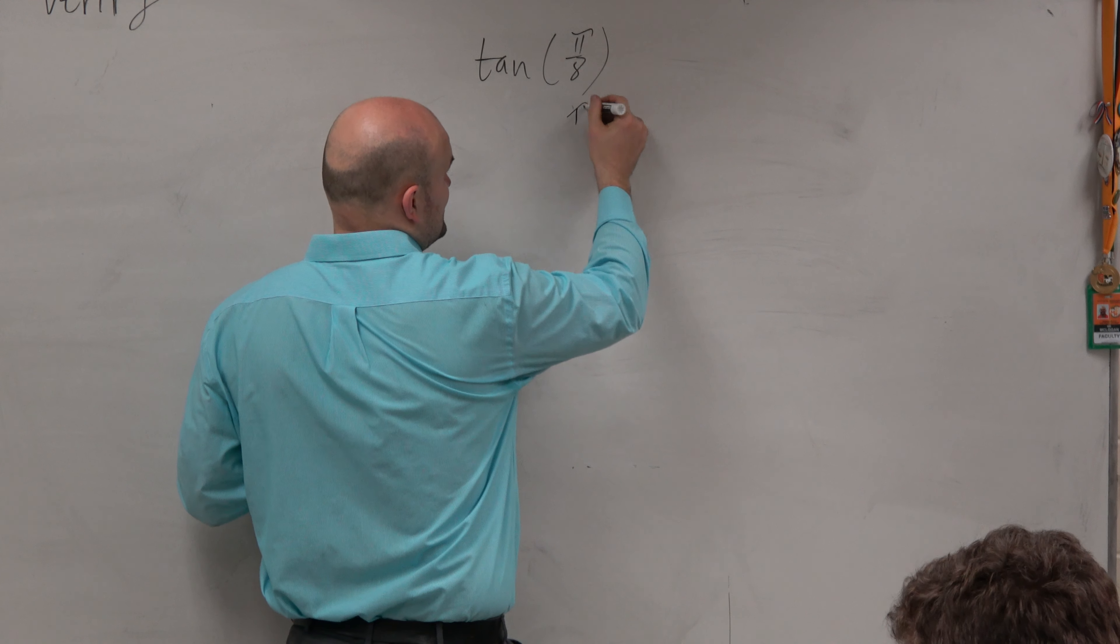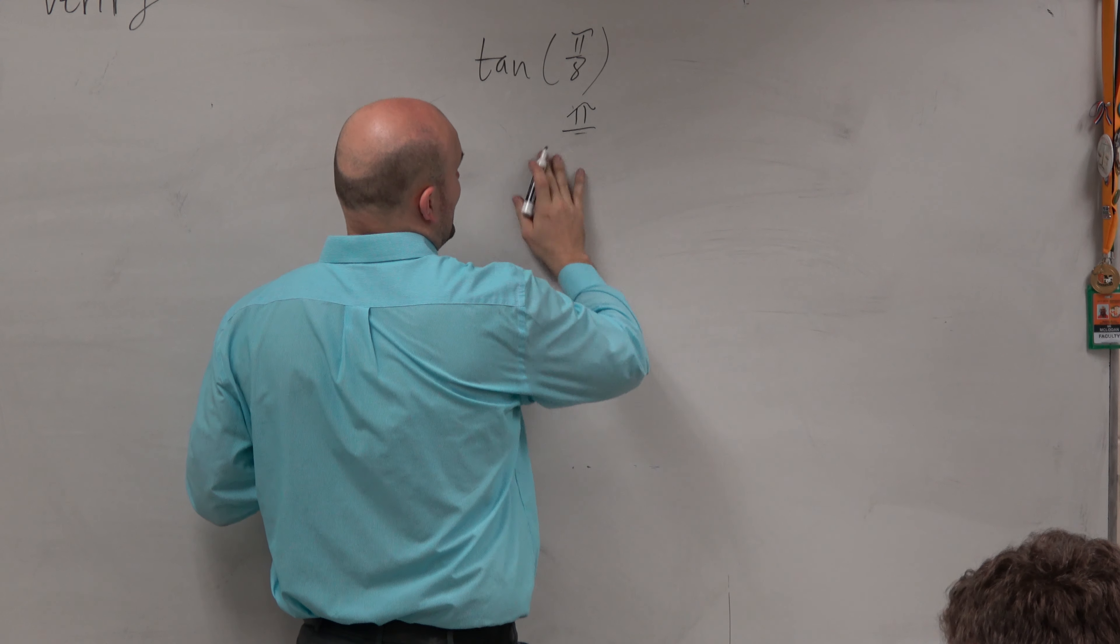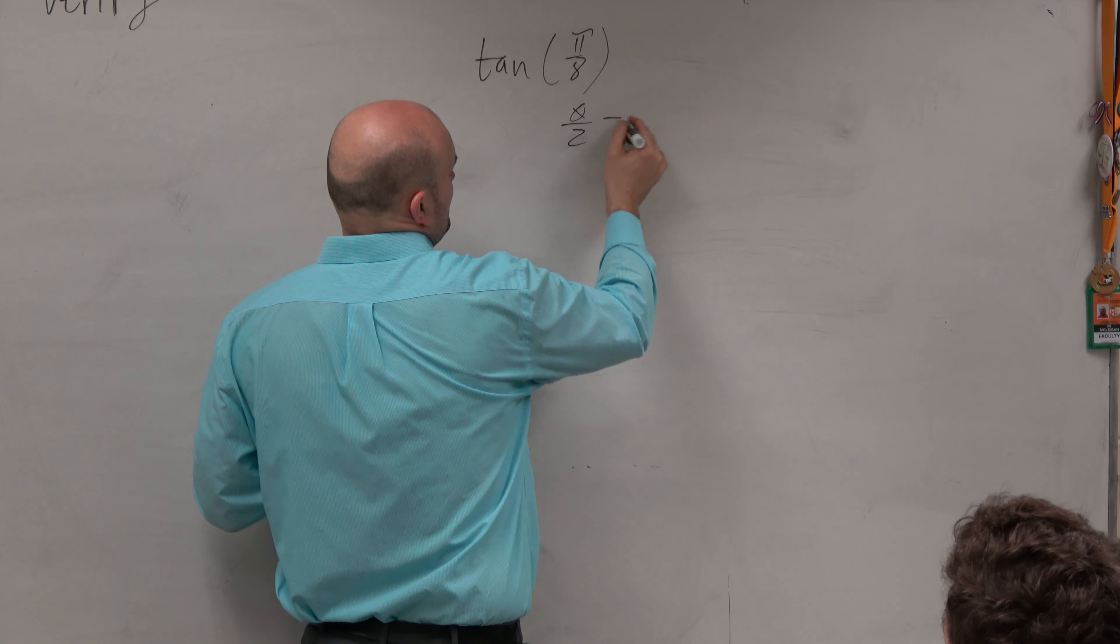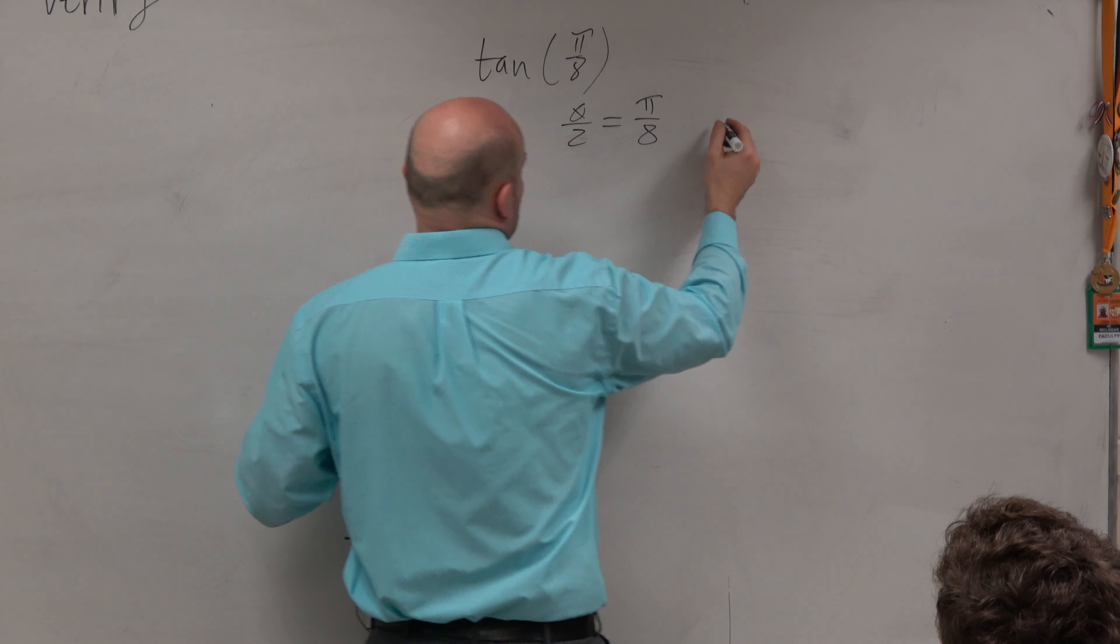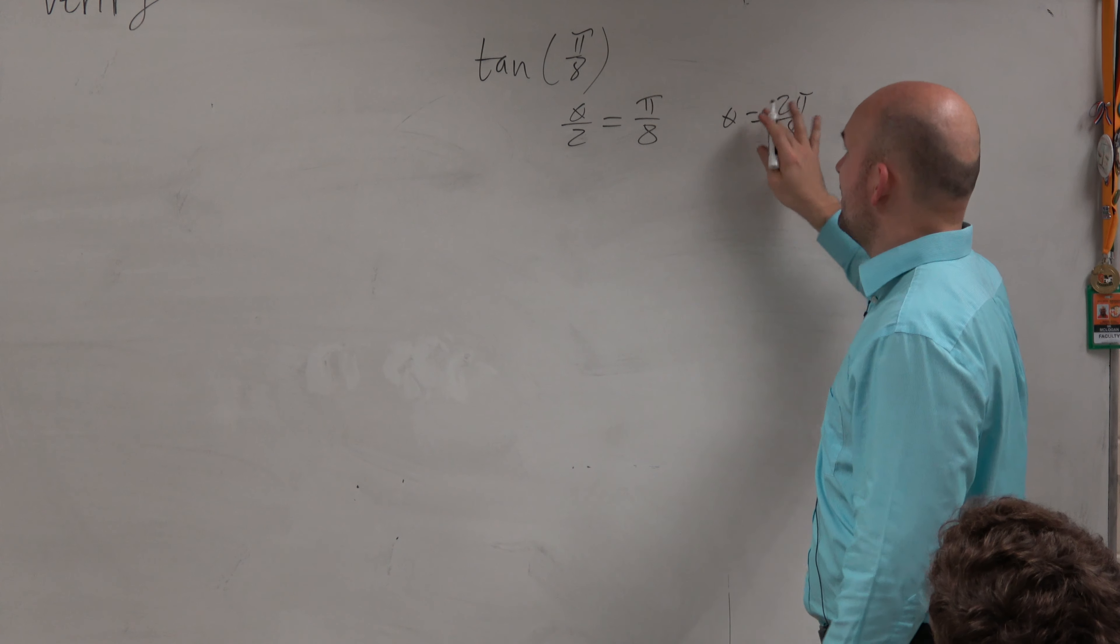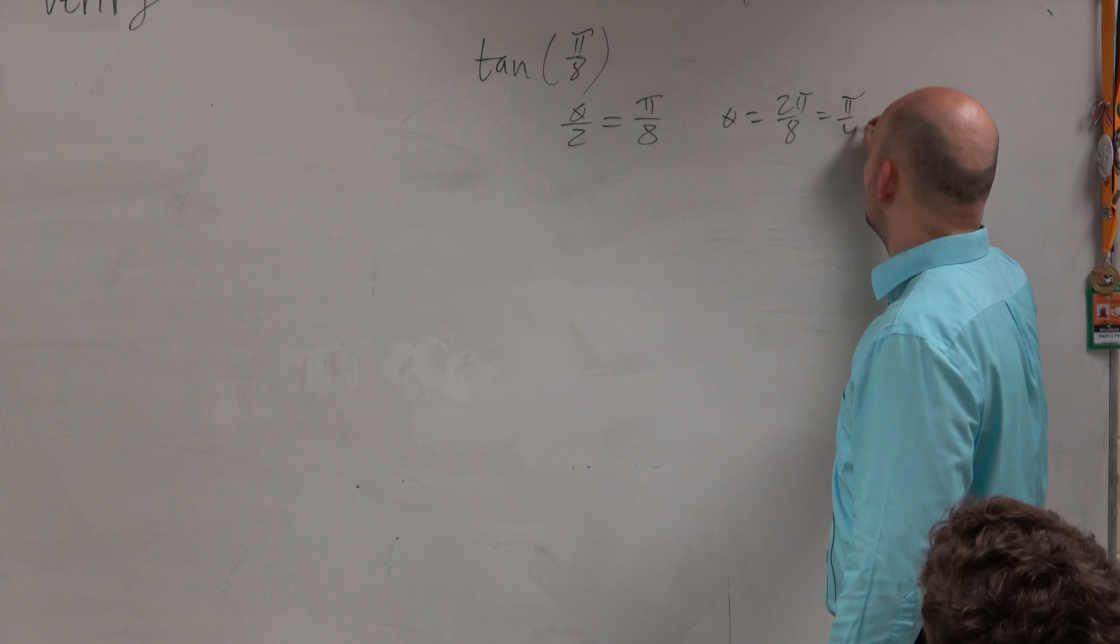There is no plus or minus, so we don't need to worry about this. But we know that if we're using our half angles, then we've got to figure out what theta is. So we multiply by 2 on both sides, and we get pi over 4.